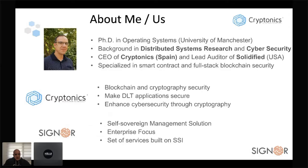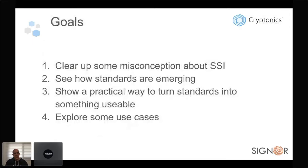I'm going to talk a little bit about Signal, which is our platform in very early stages — a platform for self-sovereign identity. I won't say anything about products and businesses; I'm going to show code examples on how we actually implement a real self-sovereign identity application. The goals of this workshop are: first, clear up misconceptions about self-sovereign identity; second, talk about emerging standards; third, show how to turn those standards into something useful; and finally, explore use cases with coding examples.